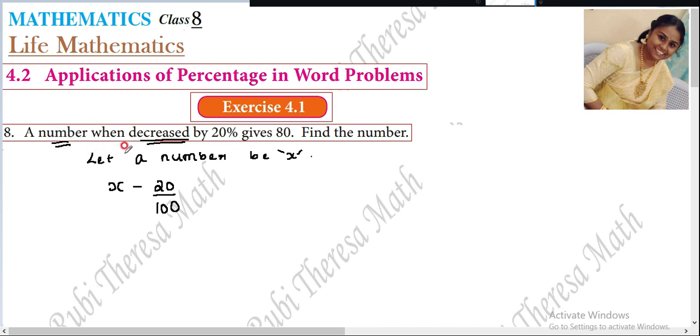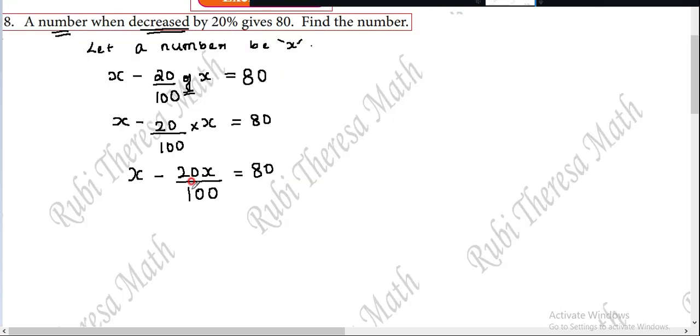Not a number 0. This is actually the number x. The number x gives 80. 80 is the final value. So what do we do? x minus 20 by 100 into x, of now what do we do into, equals 80. x minus 20 into x, 20x variable number multiply multiplication into x by 100 equals.